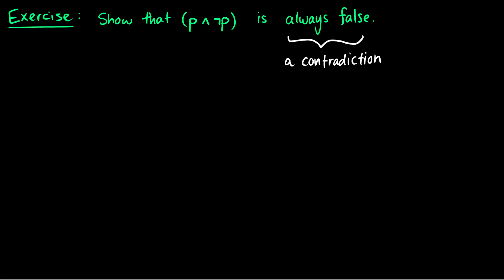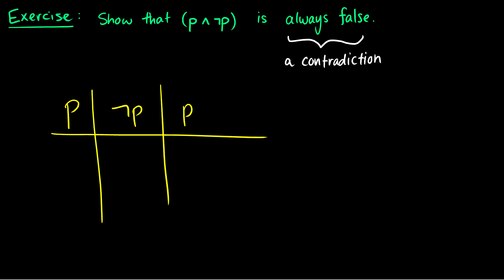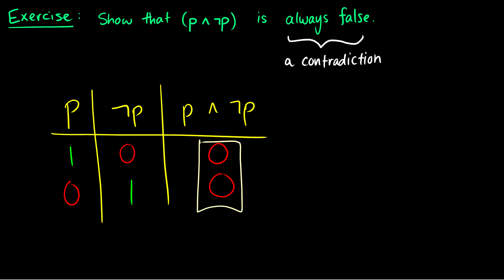Finally, I want to show that P∧¬P is always false — otherwise known as a contradiction. If P is true, then ¬P is false; if P is false, then ¬P is true. P∧¬P is true only when both P and ¬P are true simultaneously, but they can never both be true at the same time. So all outputs are zero — this is a contradiction.